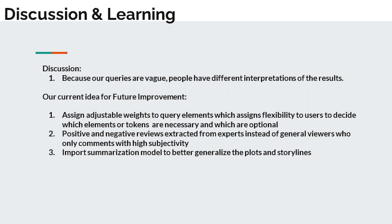Based on the previous examples and results, we found that people may have different interpretations of the results. To further improve our model, it would be good to assign flexibility to users to decide which parts of the inputs are necessary and which are optional. Besides, we can improve by collecting reviews from experts instead of viewers with high subjectivity, and by incorporating a summarization model to better generalize our plots and storylines.